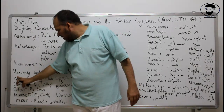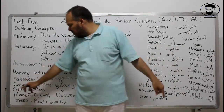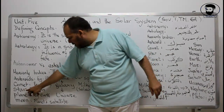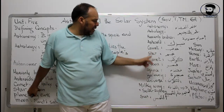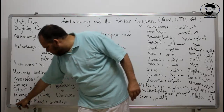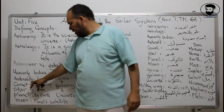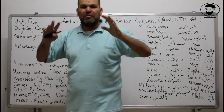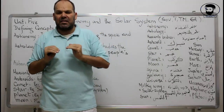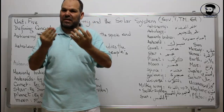The heavenly bodies include first the asteroids, then the comets, the stars, the planets, and the moons. An asteroid is a big rock in space. It is not a planet — it is smaller than a planet, it is just a rock. A rock, a big rock in space. It's like a planet, but it's not.